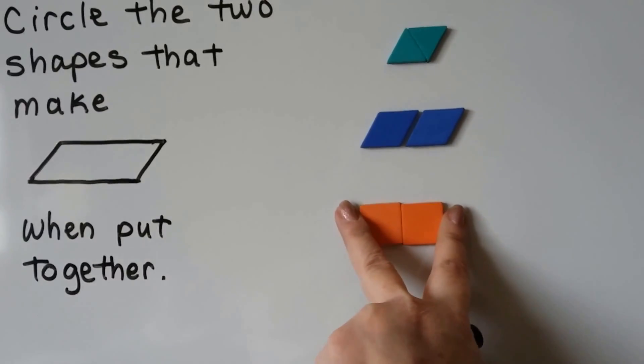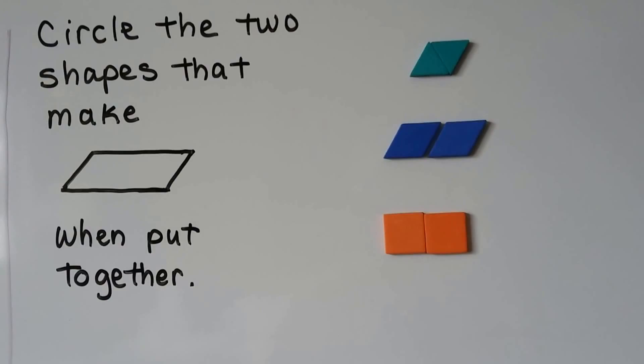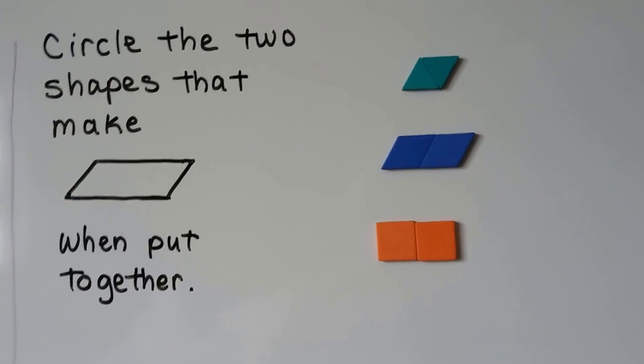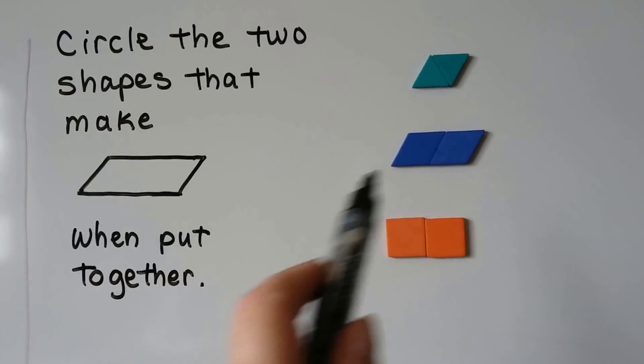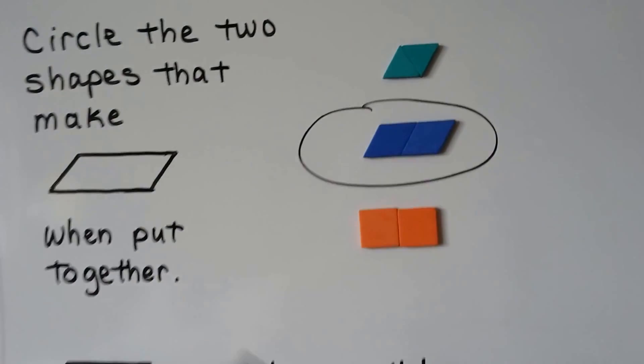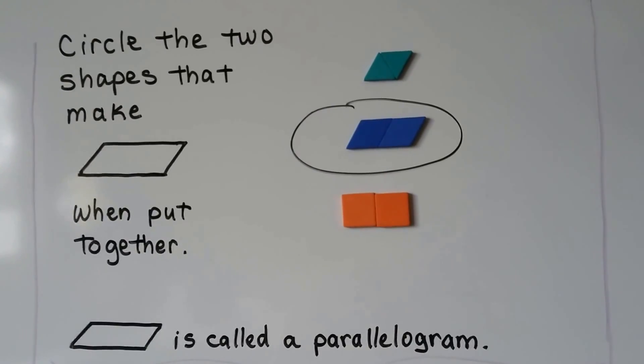And when we put the two squares together, it makes a rectangle, and the sides aren't slanting, are they? But when we squeeze these two rhombuses together, we make the same looking shape, don't we? So it would be this one. This shape is actually called a parallelogram, and you're going to learn about that as you get older.